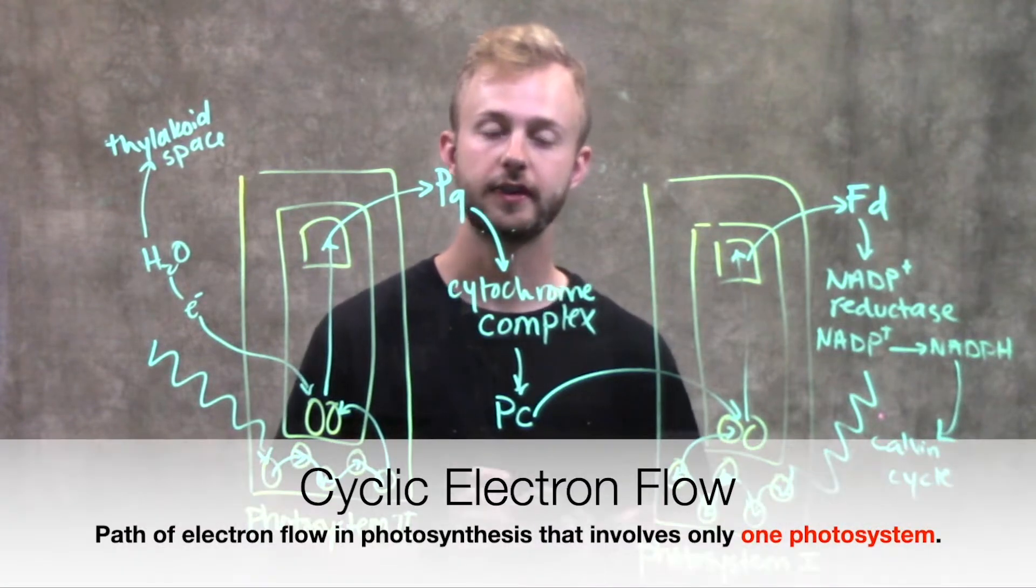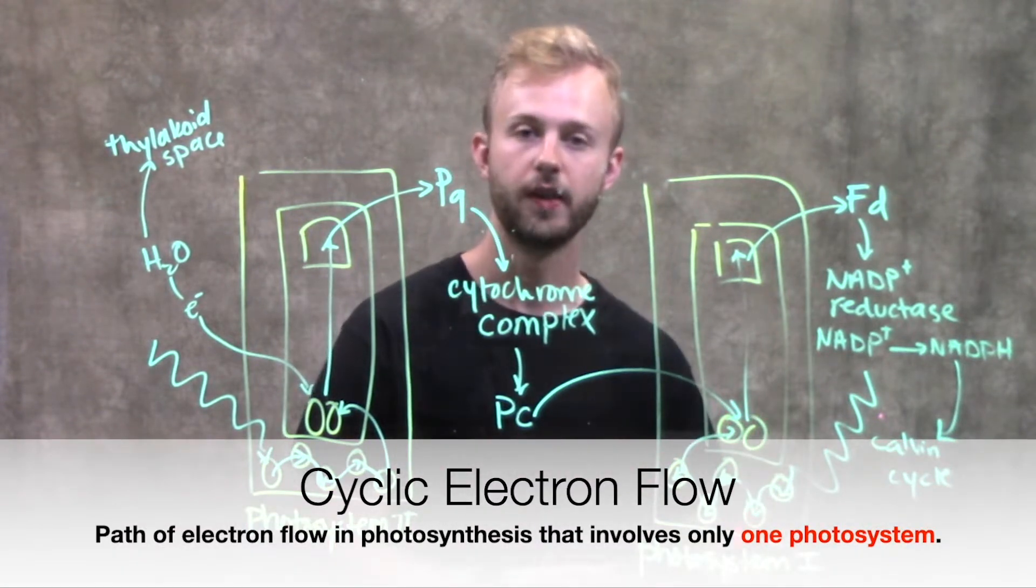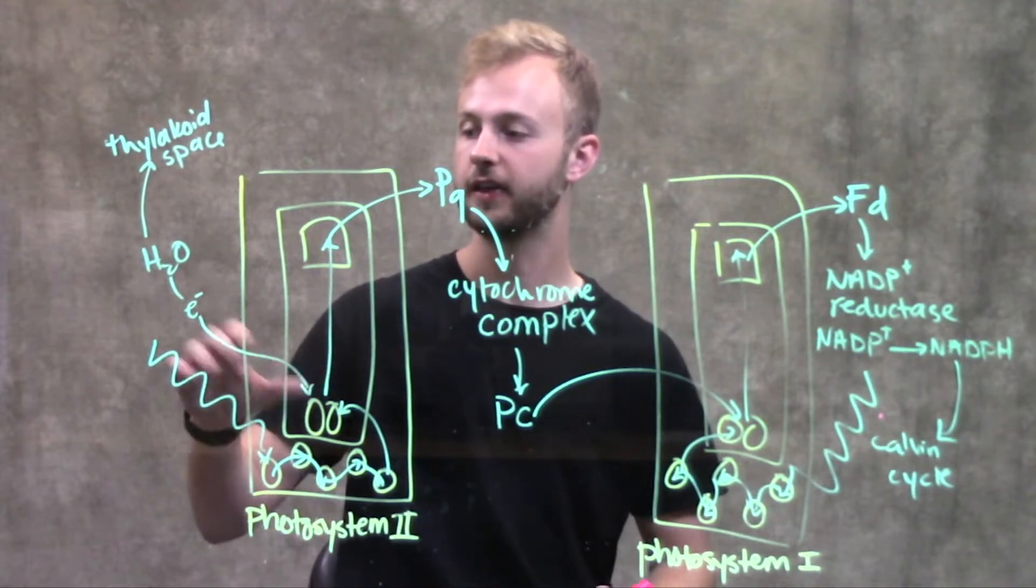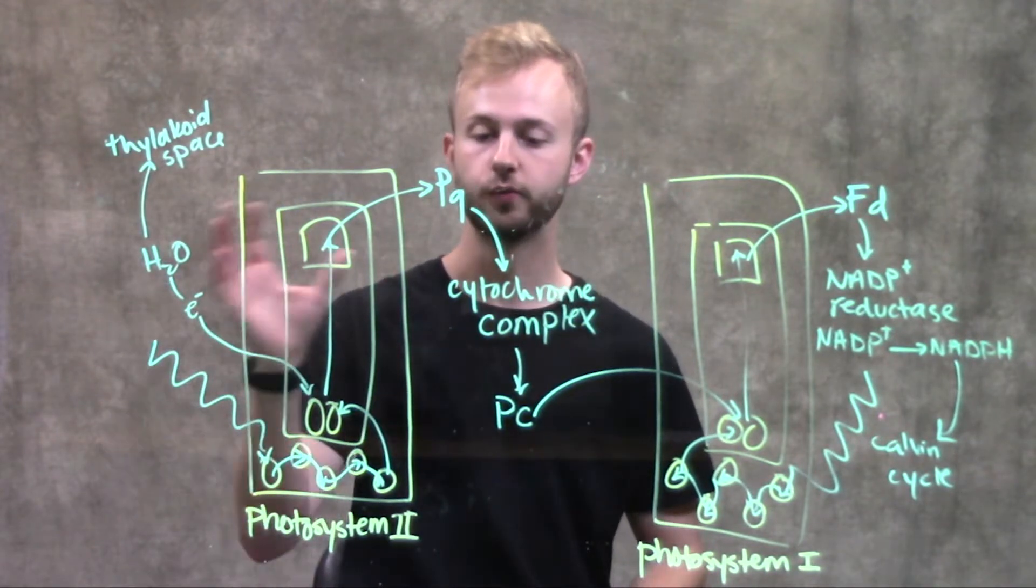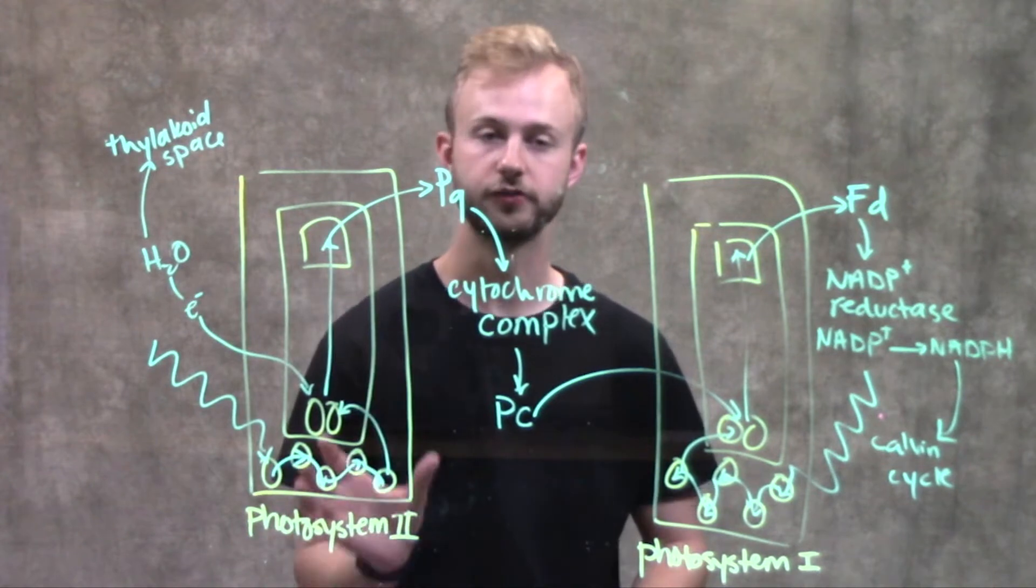Cyclic electron flow is unique in that it only uses photosystem 1. That means we're not going to be producing any oxygen because we're not splitting water to resupply the chlorophyll in photosystem 2.